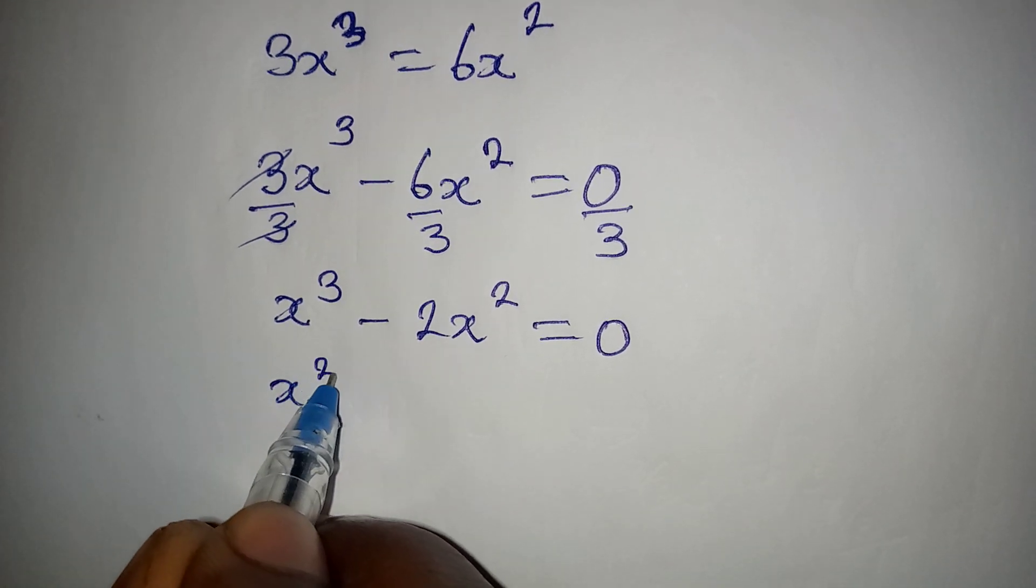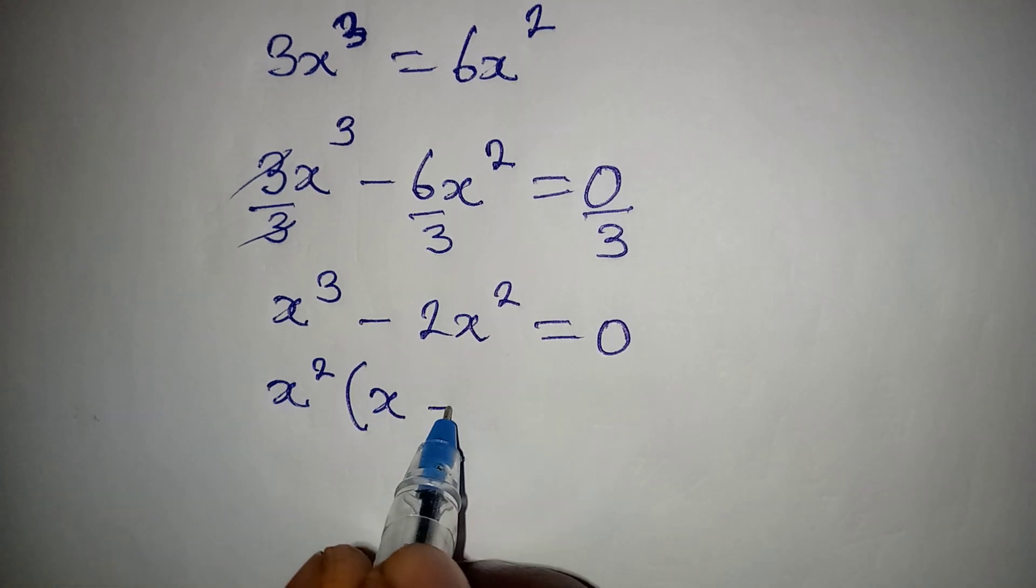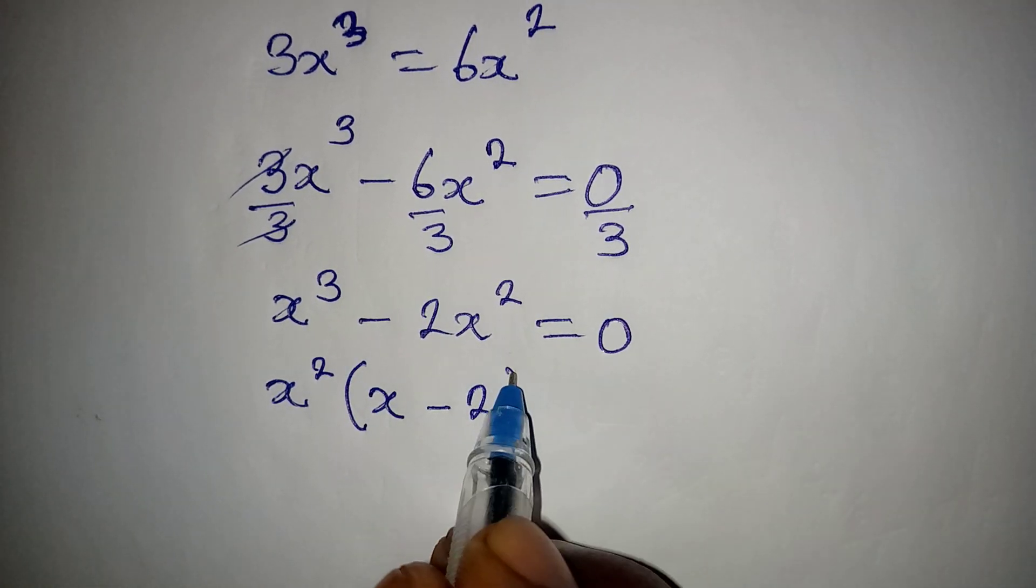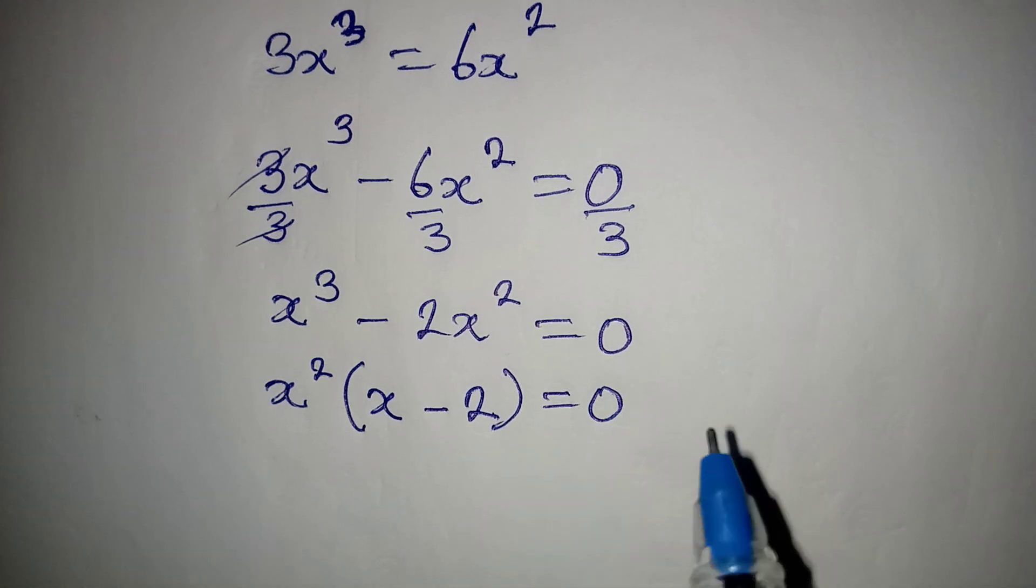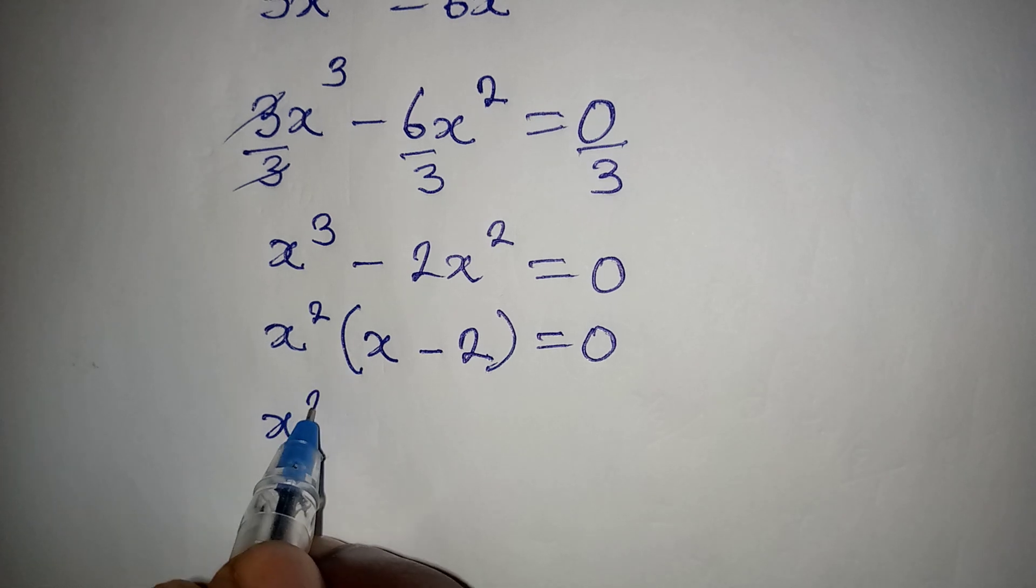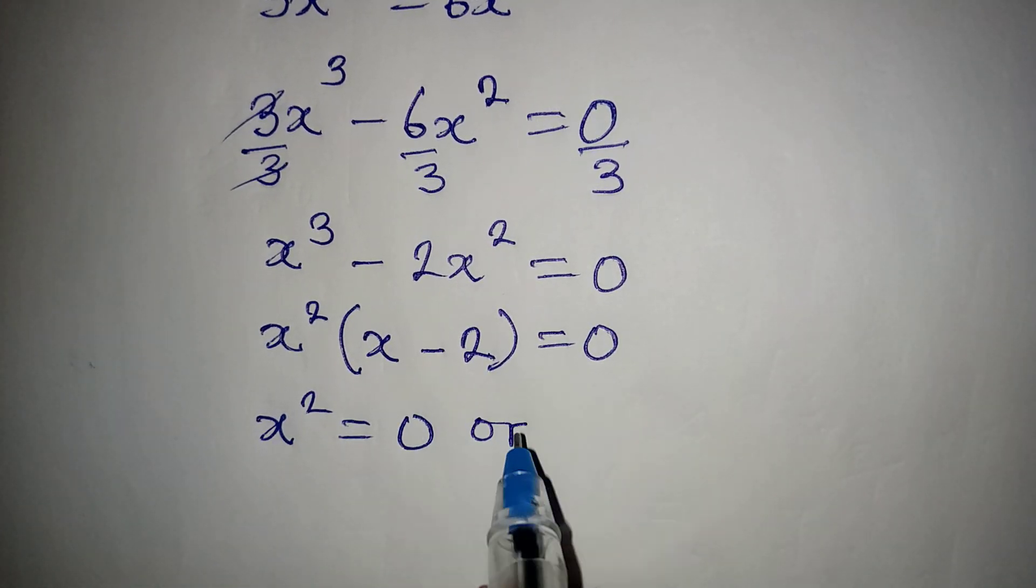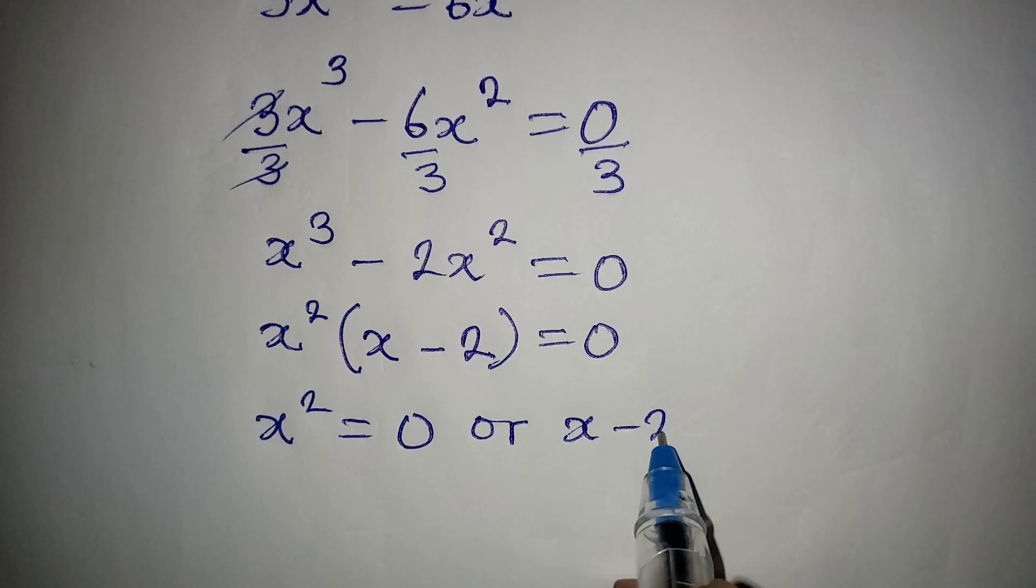Then here we are going to have x squared times x minus 2, and then this is equal to 0. From here it means that x squared is either equal to 0 or x minus 2 is equal to 0.